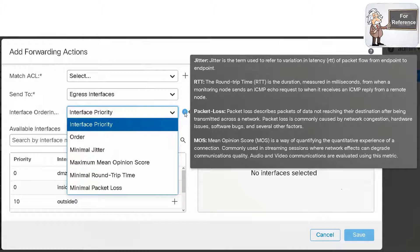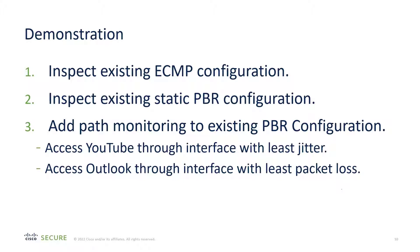Here we show the in-line documentation available when you try to add the forwarding action when configuring policy-based routing. Let's move on to the demonstration. In the demo, we're going to inspect the existing ECMP configuration and the static PBR configuration. Then we're going to modify that PBR configuration so that YouTube traffic will go through the interface with the least jitter, and Outlook traffic will go through the interface with the least packet loss.